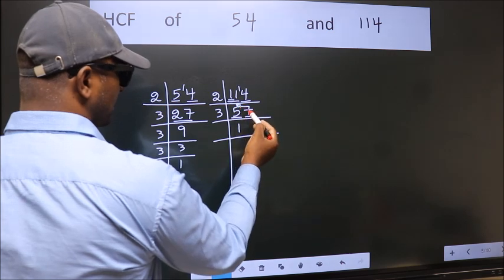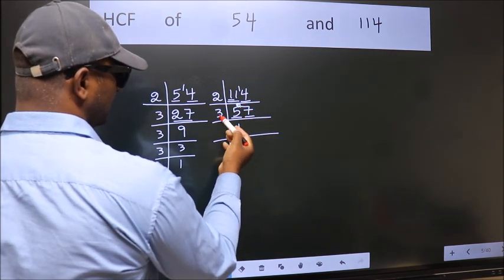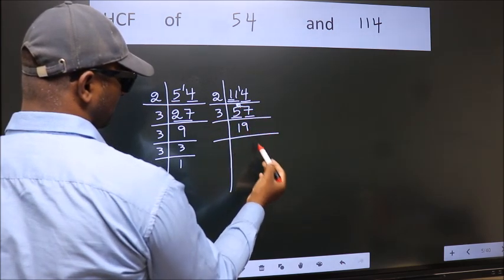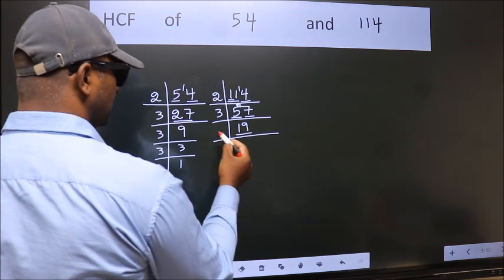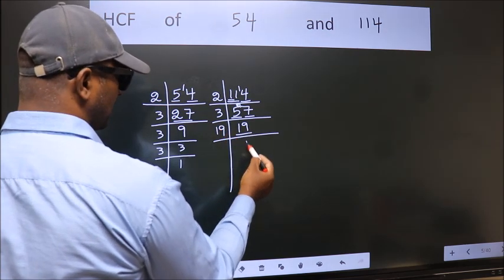2 carried forward 27. When do we get 27 in the 3 table? 3 times 9 equals 27. Now, 19 is a prime number. So, 19 times 1 equals 19.